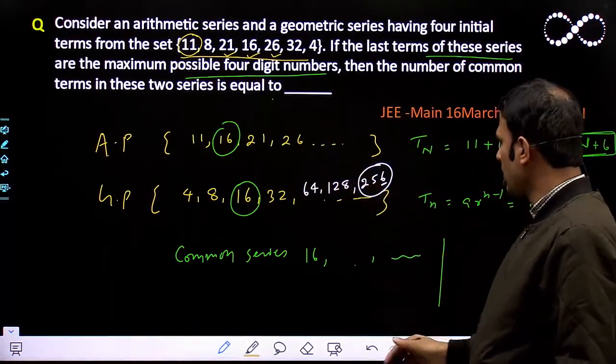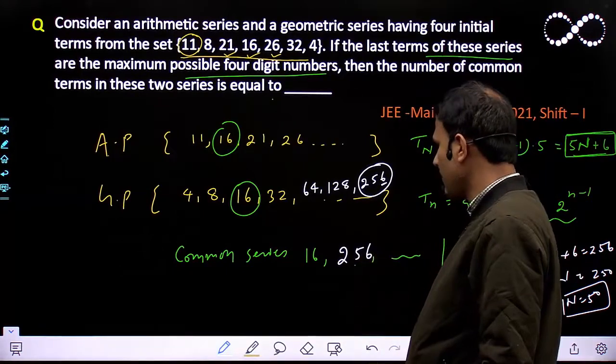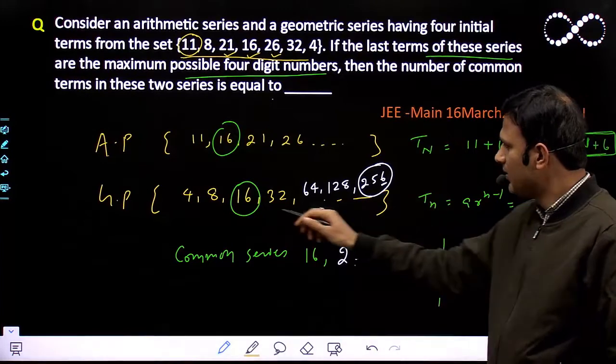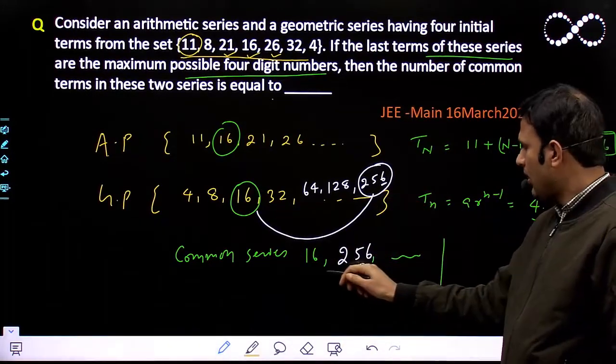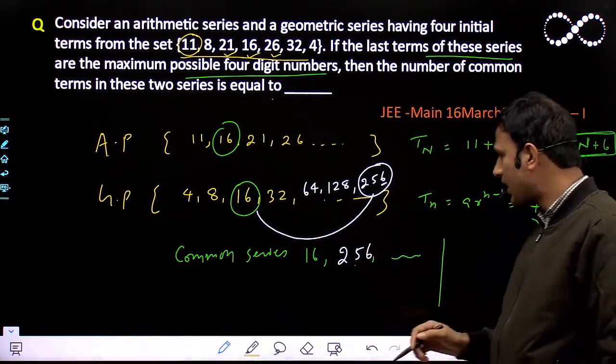If 5N + 6 = 256, and N is natural, then it's common, otherwise not. 256 - 6 = 250, so N = 50. N equals 50, meaning the 50th term is 256. So 16, then 256...